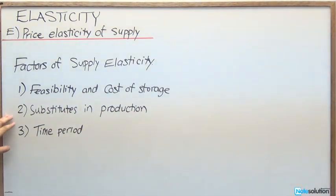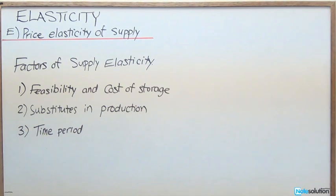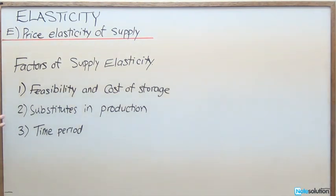For the second factor, we're going to look at substitutes in production. That's to say a company has a choice between producing one thing or another, and the easier it is for them to switch from producing good X to good Y, the more supply elastic that good will be.